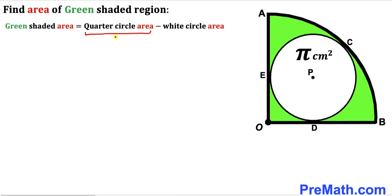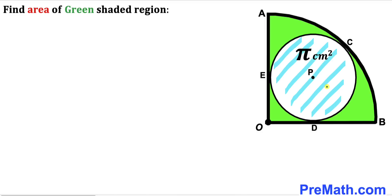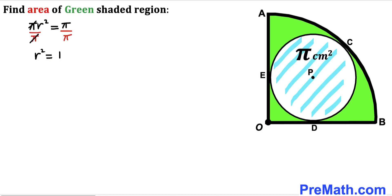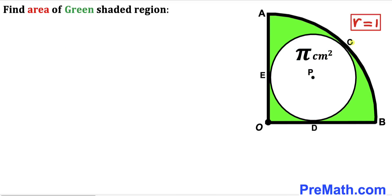Let's focus on the white circle and recall the area formula: area equals pi r square, where lowercase r is the radius of the white circle. The area has been given as pi, so we can write pi times r square equals pi. Dividing both sides by pi, r square equals 1. Taking the square root of both sides, lowercase r equals 1 centimeter. So the radius of this white circle is 1 centimeter.